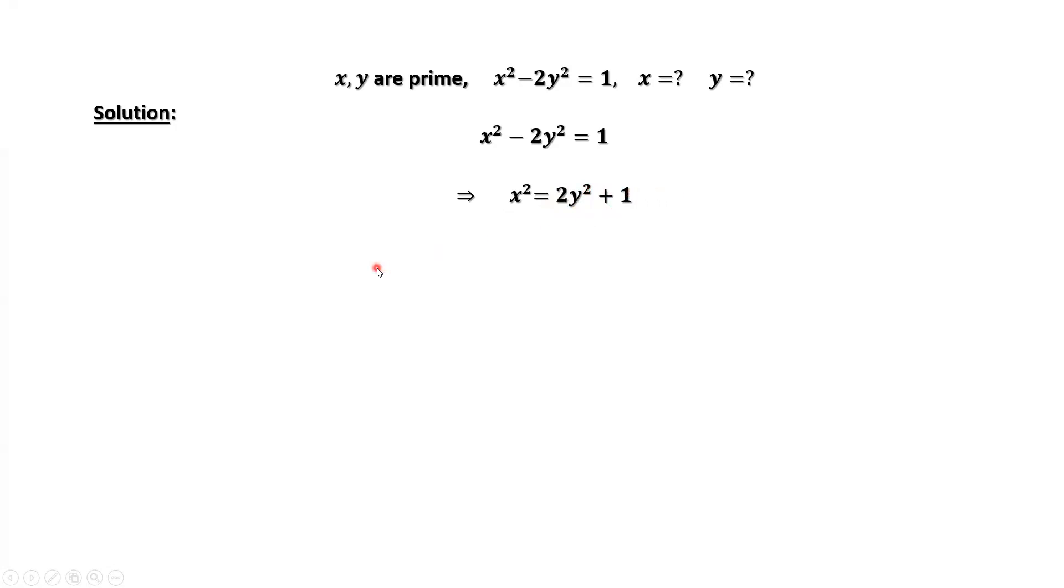This implies x squared is odd. If x squared is odd, x must be odd. We can define x as 2k plus 1 for some k, a natural number.